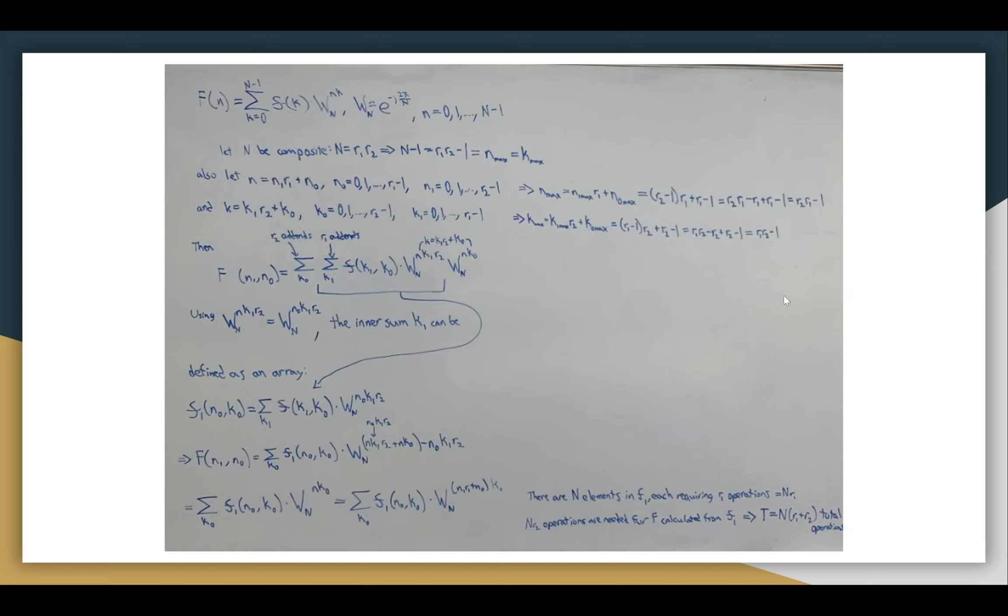What's important to note about this is that there are n elements in F1 with each requiring R1 operations. The total number of operations required for the computation is n times R sub-1. And n times R sub-2 operations are needed for F calculated from F1, meaning that the total number of operations equals n, our number of elements, times R1 plus R2. That's the total number of operations, where R1 and R2 are any factors that multiply to our overall period.